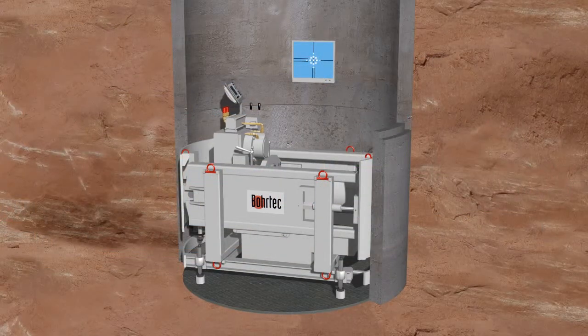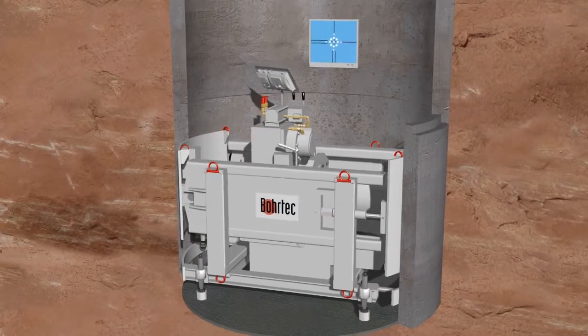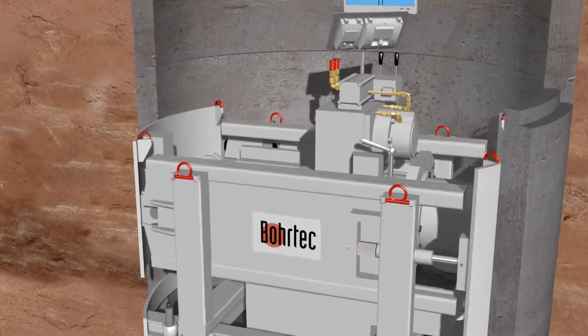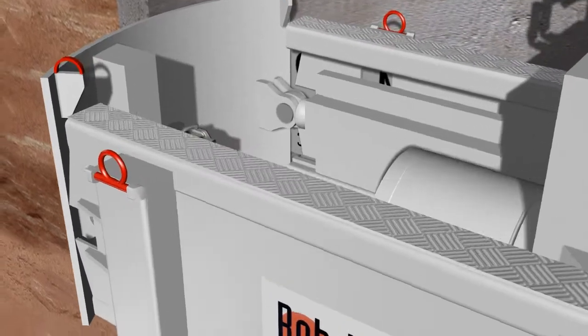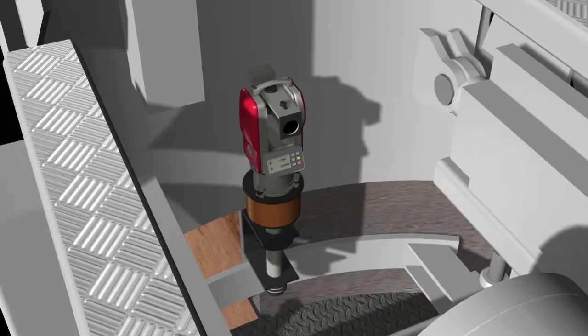After the machine is set up, the guidance system is installed. The Theodolite with its electronic camera is mounted on a height-adjustable support, independent of the machine.